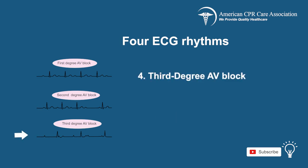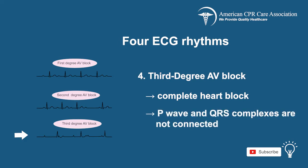The fourth and final type of Bradycardia ECG rhythm is third degree AV block, which is a complete heart block where the P wave and the QRS complexes are not connected.